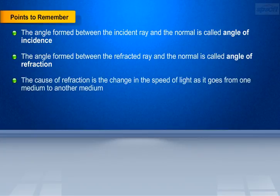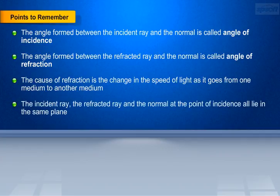The cause of refraction is the change in the speed of light as it goes from one medium to another medium. The incident ray, the refracted ray, and the normal at the point of incidence all lie in the same plane.